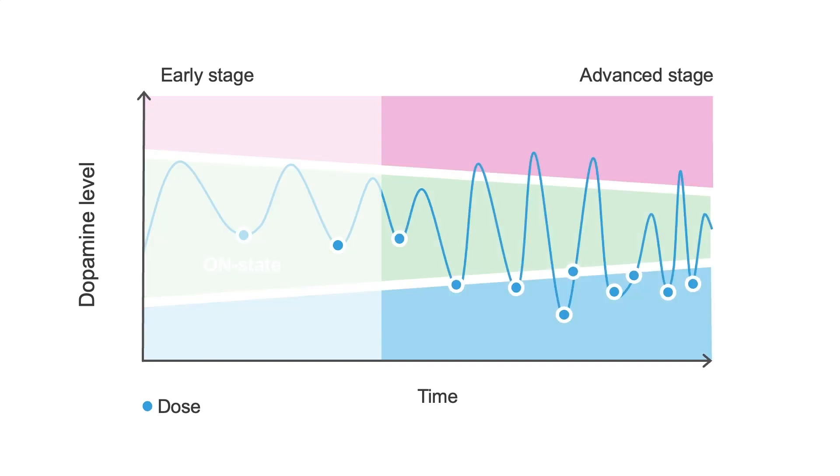However, as patients enter the middle and advanced stages of the disease and endogenous dopamine cells are lost, they spend more time in the off state when their medications aren't working. Patients begin to notice that their medications wear off and their symptoms return before the next dose. It also takes time for the medications to kick in.